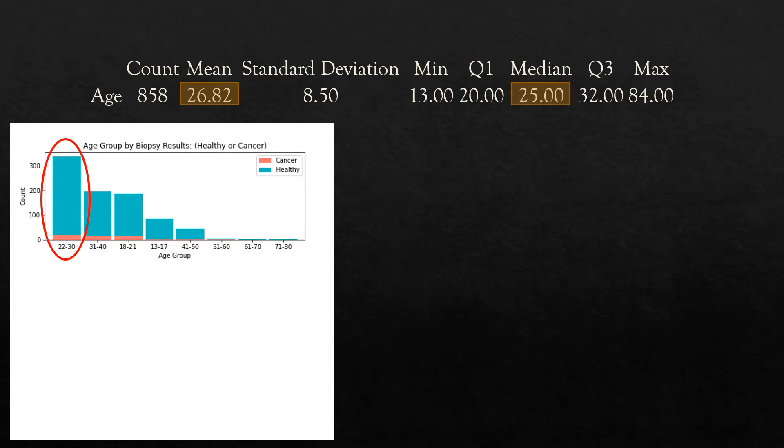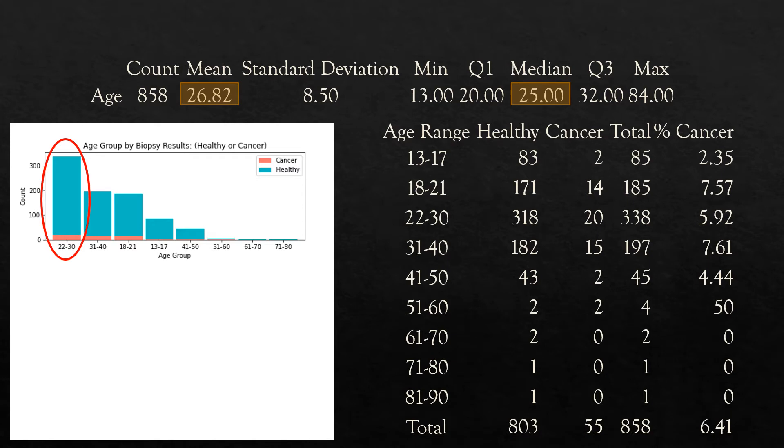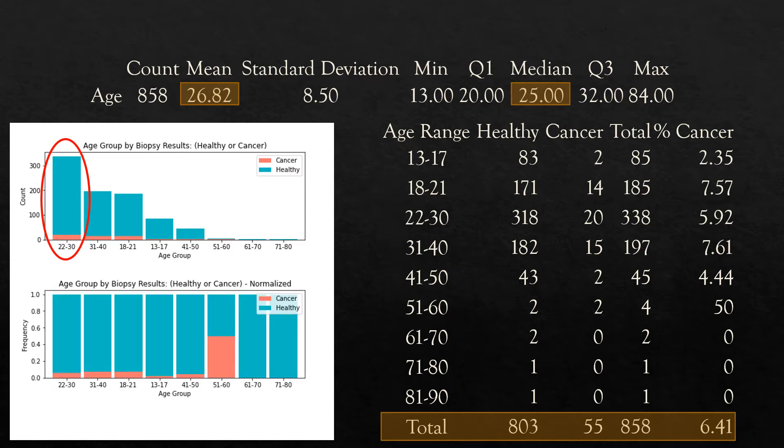Overlaying the biopsy results, there exists a class imbalance problem. Even from a visual standpoint alone, there are more healthy cases than not. This is confirmed by the contingency table, which shows 803 healthy cases and only 55 cancerous ones. Normalizing the bar graph uncovers that the positive biopsy results have the highest frequency among 51 to 60 year old patients.